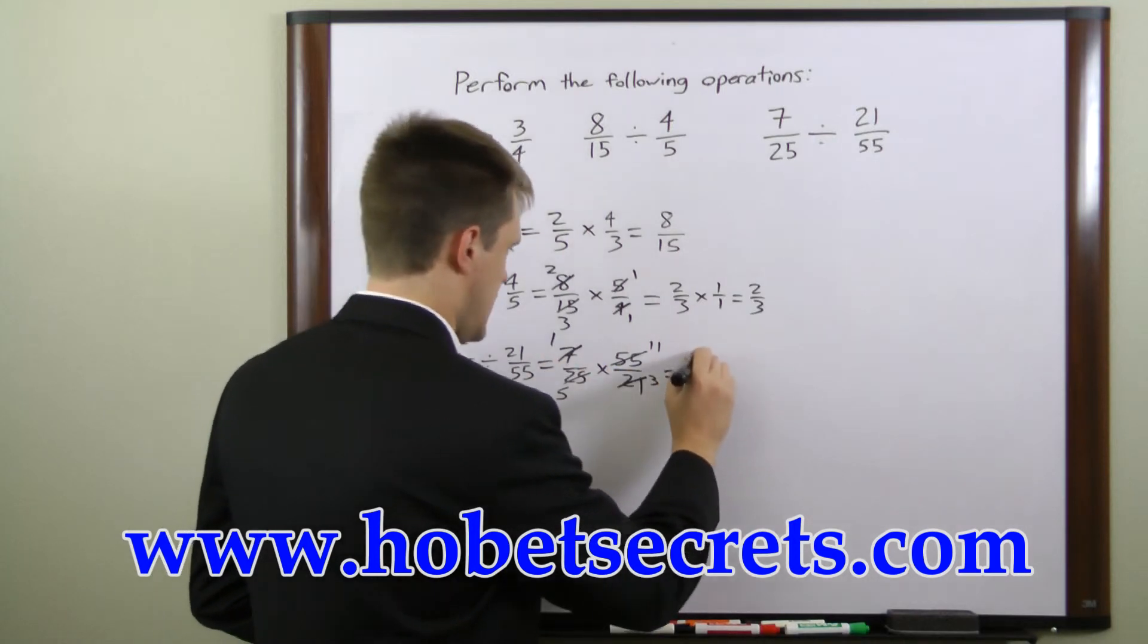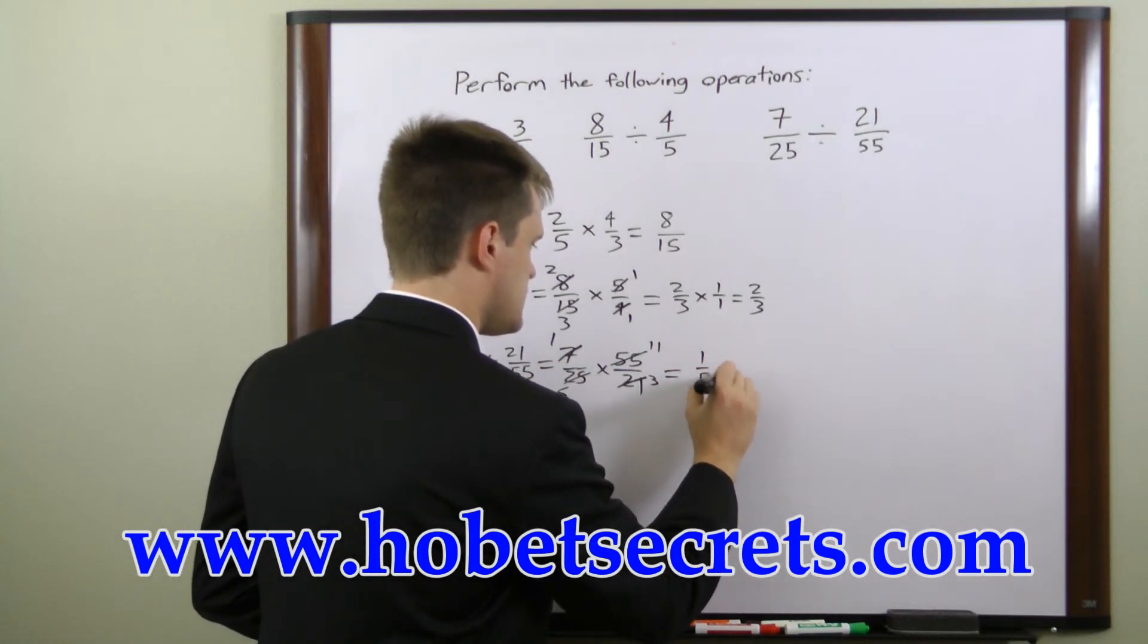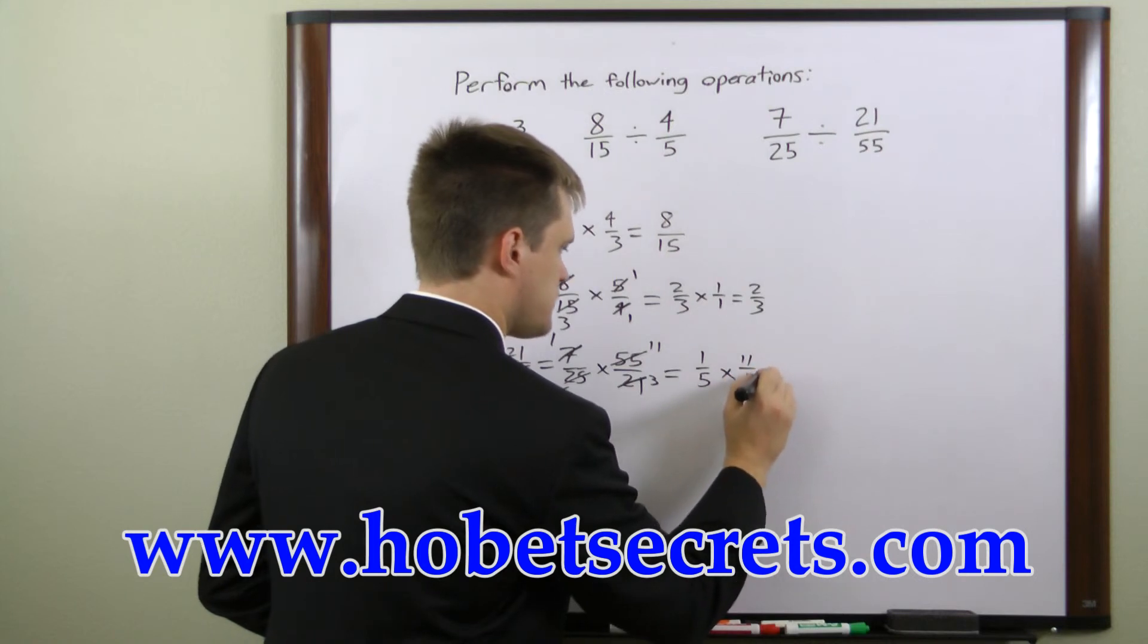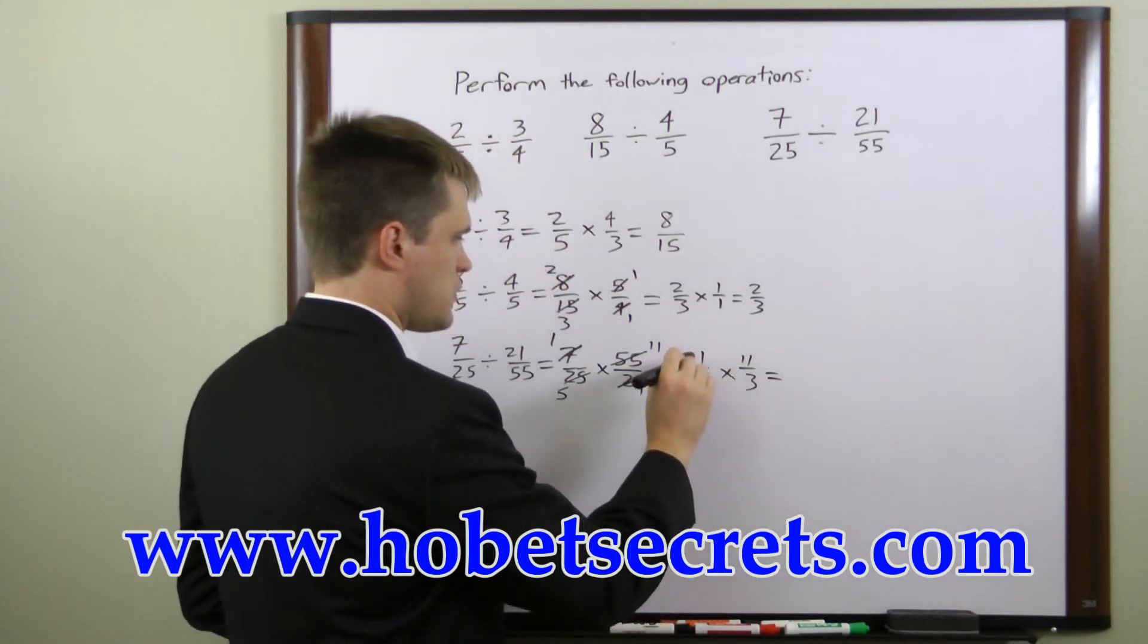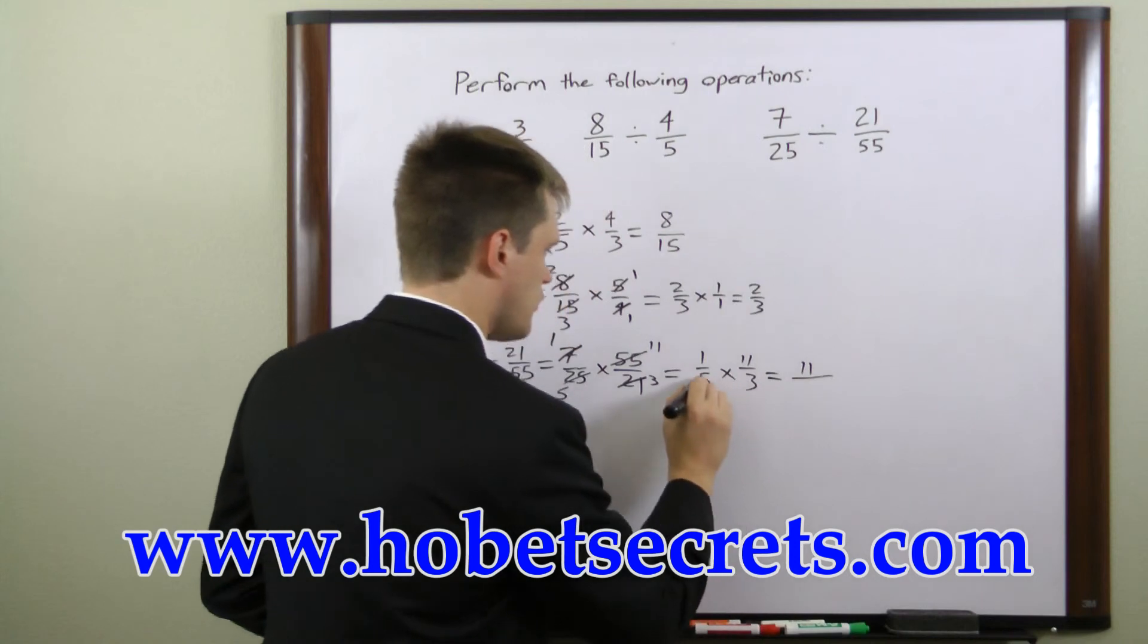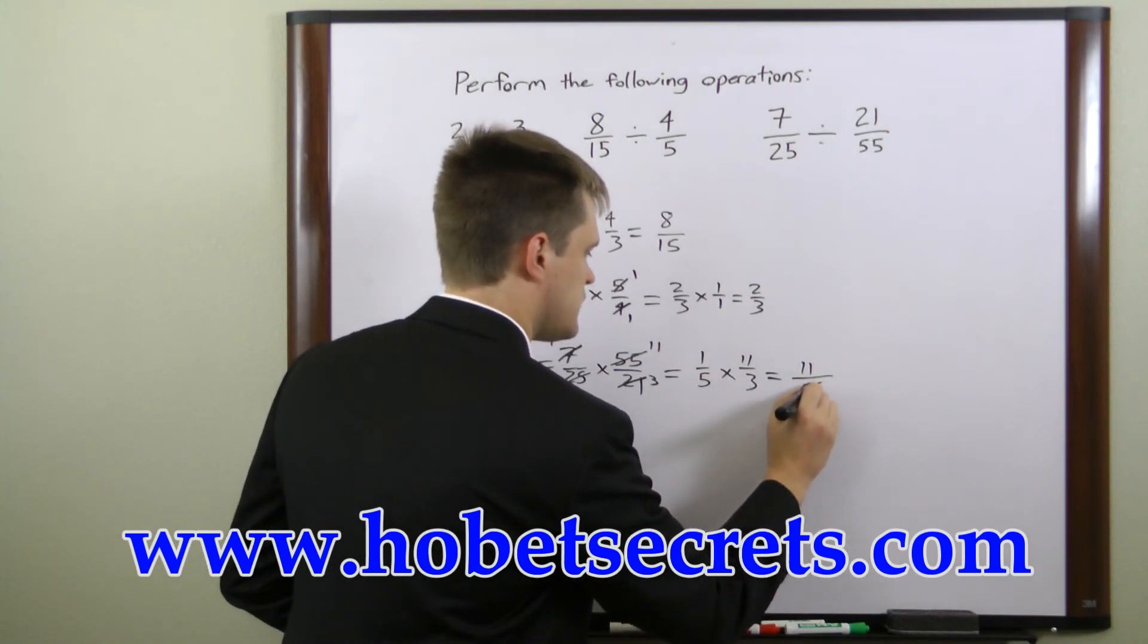Then we'll rewrite this as one over five times eleven over three. And then we can just multiply. We get eleven over five times three is fifteen.